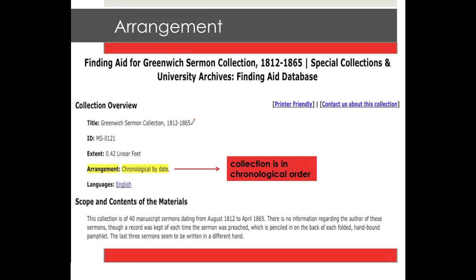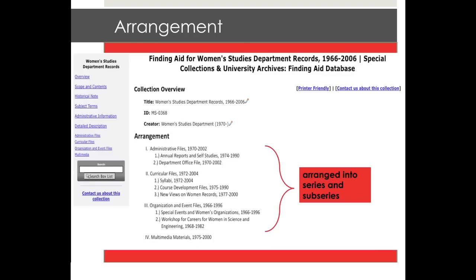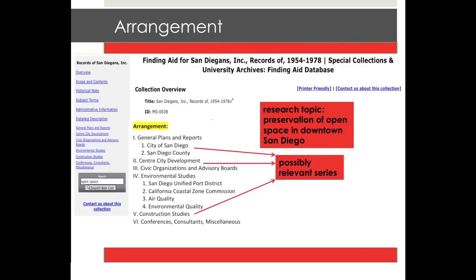The arrangement of the collection is sometimes detailed within a scope and content note, and sometimes it is a section by itself. This information will tell you how the collection is intellectually organized. Depending on the collection, the organization can be as simple as alphabetical or chronological order. Often, however, the arrangement of a collection is a hierarchical structure of related series and sub-series. Usually the structure of arrangement mirrors the original order that the collection was received in, so that the user can see the context and use of the records as the creator did. Pay close attention to the arrangement of a collection, as documents related to your topic may appear in only selected series and sub-series, so you may save yourself a lot of time by studying the arrangement.